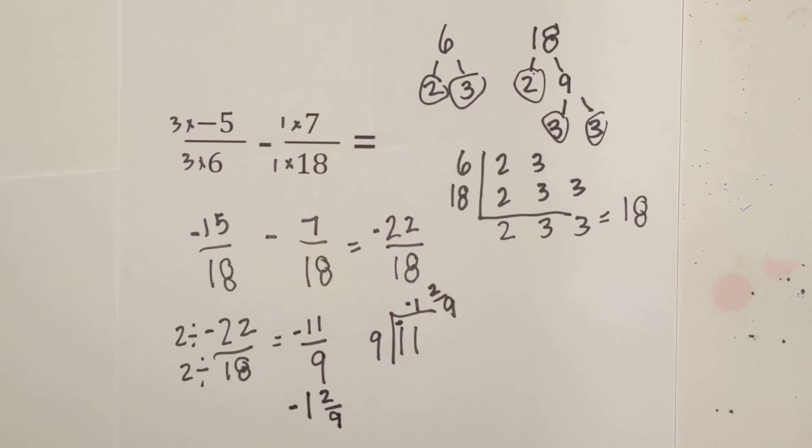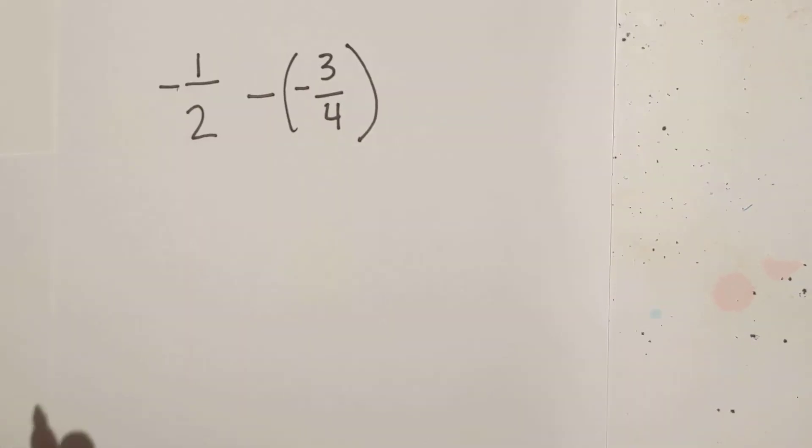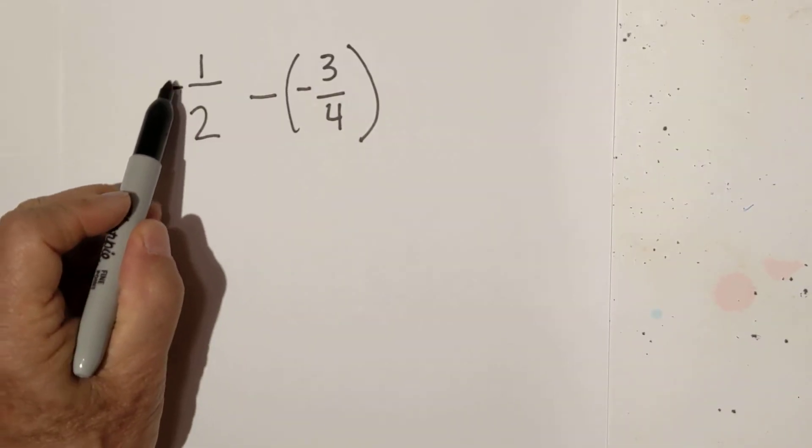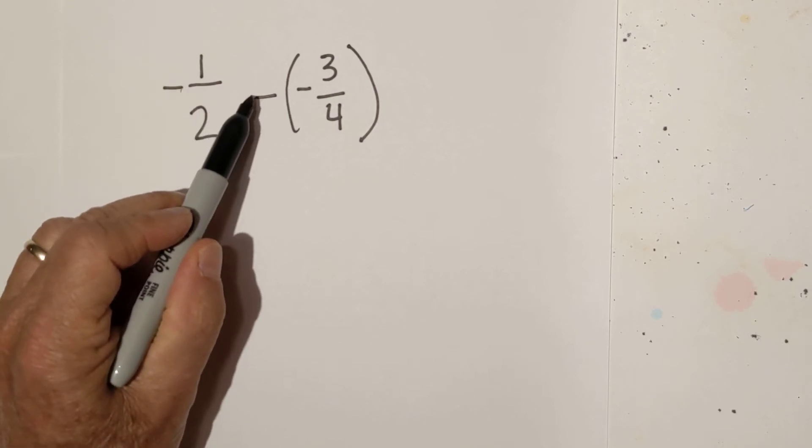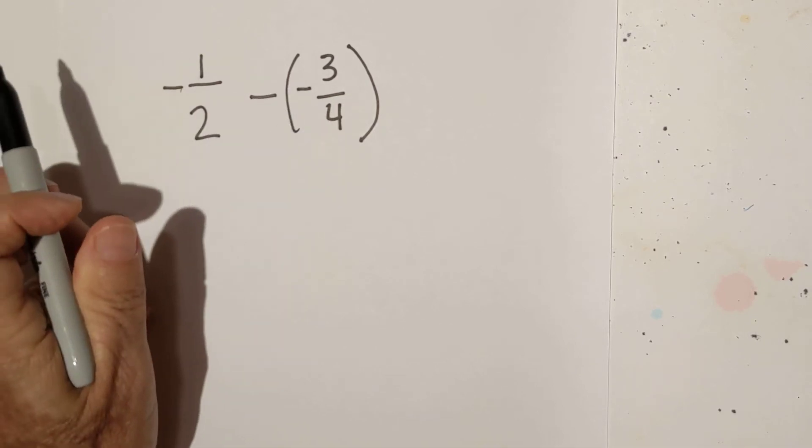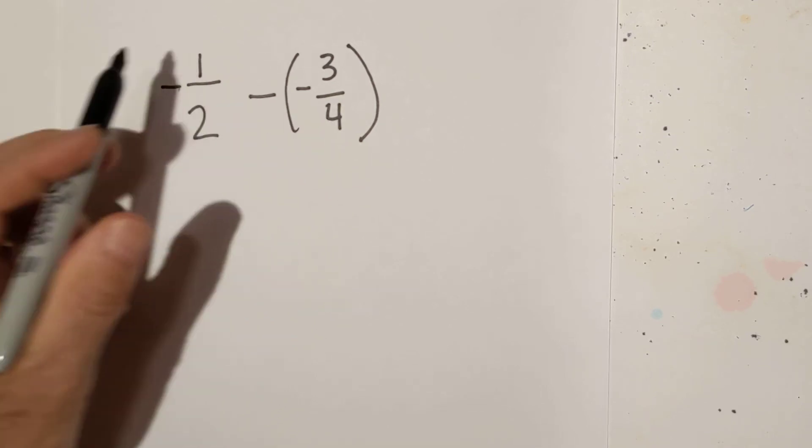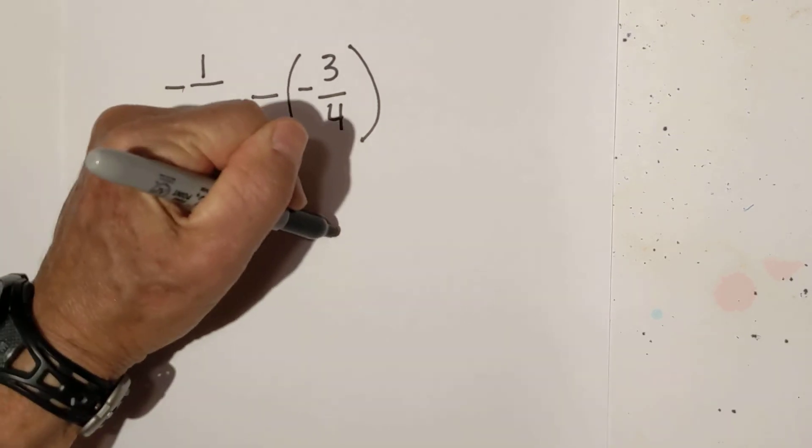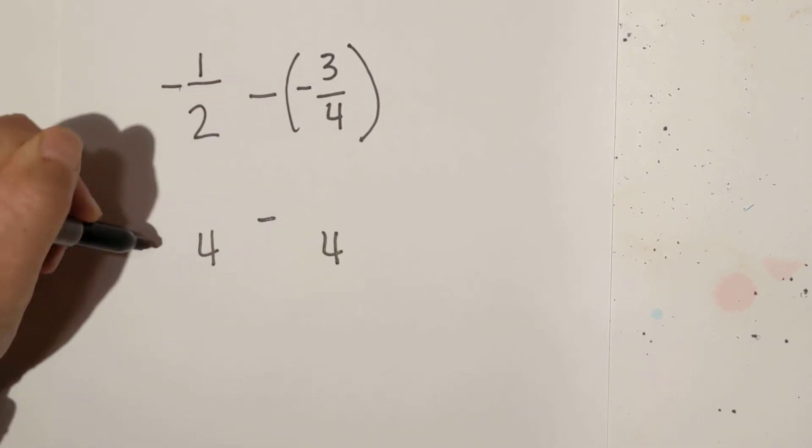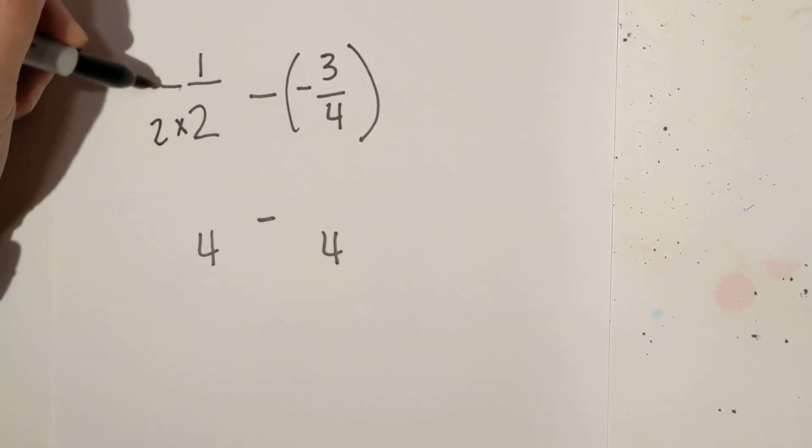Let's work one more example. Now what do we do if we have a negative 1 half and then minus a negative 3 fourths? Let's first find the common denominator. And guys I can just look at this one. I know that it is 4. So we are going to write 4 and 2 goes into 4 2 times.